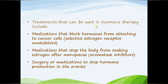Treatments used in hormone therapy include: medications that block hormones from attaching to the cancer cells, called selective estrogen receptor modulators; medications that stop the body from making estrogen after menopause; and surgery or medications to stop hormone production in the ovaries. In short, we decrease the level of estrogen or block estrogen from attaching to receptors on cancer cells to reduce cancer cell growth.